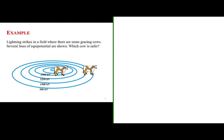Lightning strikes in a field where there are some grazing cows. Several lines of equipotential are shown. Which cow is safer? Let's look at this by drawing our own lines of equipotential.